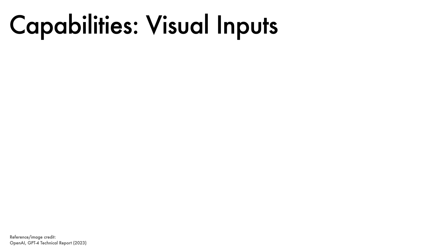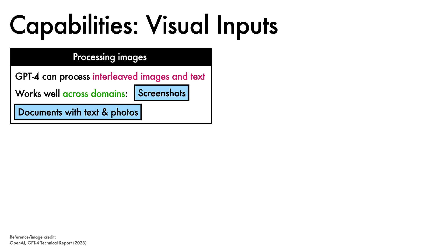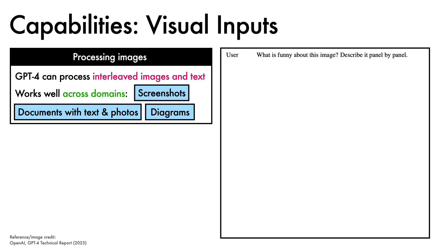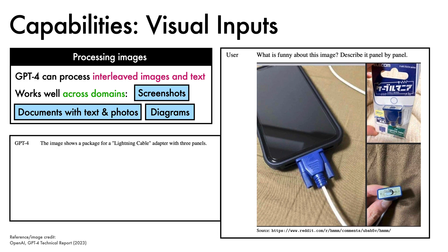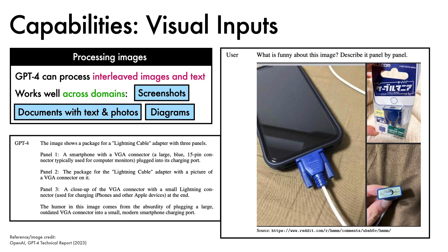We next turn to capabilities on visual inputs. GPT-4 can process interleaved images and text, and is found to work well across domains such as screenshots, documents with text and photos, and diagrams. As a qualitative example, here is a sample in which the user asks, what is funny about this image? Describe it panel-by-panel. GPT-4 replies: the image shows a package for a lightning cable adapter with three panels. Panel 1: a smartphone with a VGA connector — a large blue 15-pin connector typically used for computer monitors — plugged into its charging port. Panel 2: the package for the lightning cable adapter with a picture of a VGA connector on it. Panel 3: a close-up of the VGA connector with a small lightning connector, used for charging iPhones and other Apple devices, at the end. Finally, it notes that the humour in this image comes from the absurdity of plugging a large, outdated VGA connector into a small modern smartphone charging port.